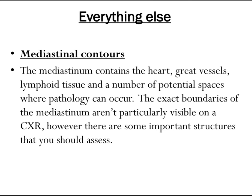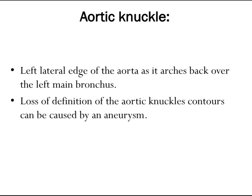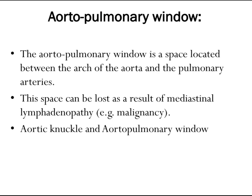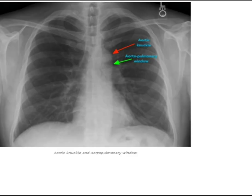E is for Everything else. Take note of the mediastinum contours. The mediastinum contains the heart, great vessels, lymphoid tissue, and a number of potential spaces where pathology can occur. Important structures to assess include the aortic knuckle — the left lateral edge of the aorta as it arches back over the left main bronchus — where loss of definition can indicate an aneurysm. The aortopulmonary window is a space between the arc of the aorta and the pulmonary arteries; this space can be lost as a result of mediastinal lymphadenopathy or malignancy.